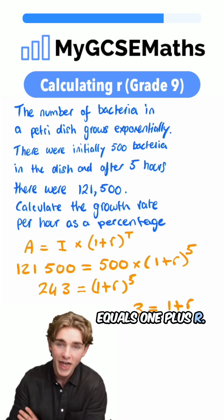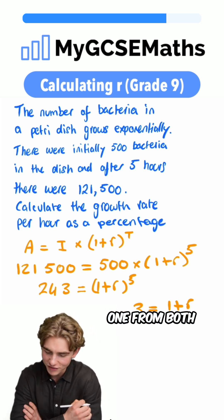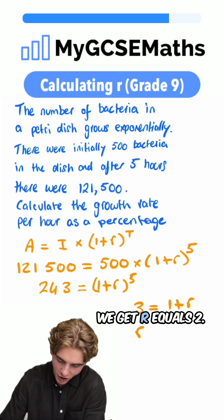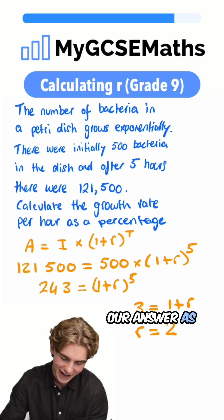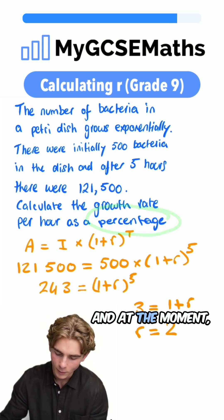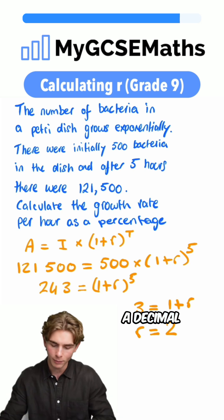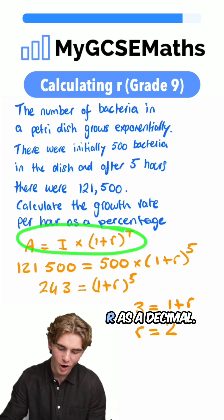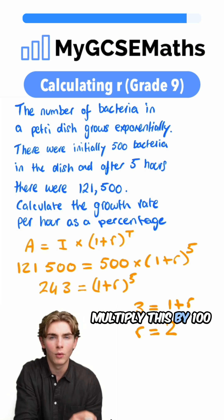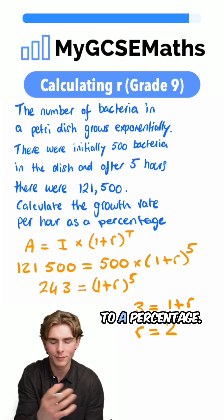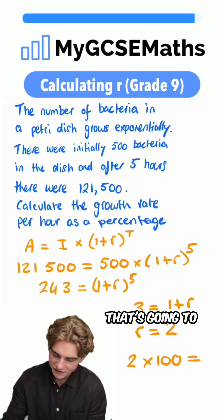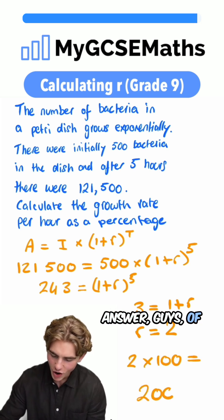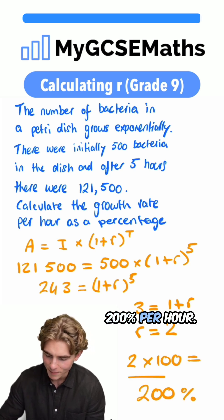Now we're going to subtract one from both sides to find the value of r. We get r equals two. But the question asks us to give our answer as a percentage, and at the moment this is actually a decimal because remember this formula has r as a decimal. So we need to multiply this by 100 to go from a decimal to a percentage. Two times 100, that's going to give us our final answer of 200% per hour.